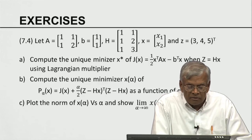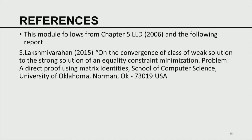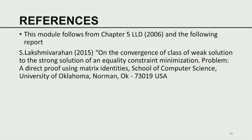This module follows from chapter 5 and a 2014 technical report on the convergence of weak solutions to strong solutions of equality-constrained minimization problems — a direct proof using matrix identities from the School of Computers, University of Oklahoma. With this, we have provided a broad overview of the richness of the linear least square problem in its static version.